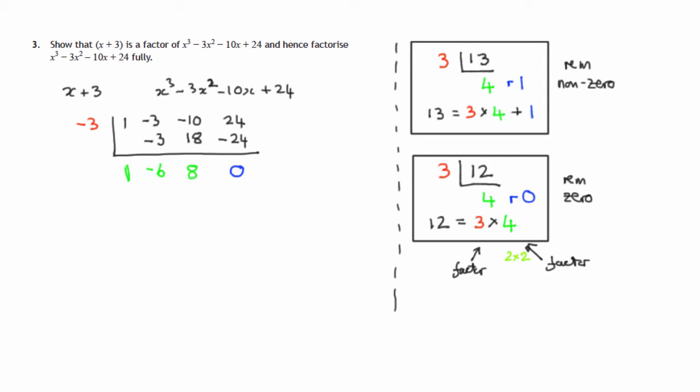So we've established that this polynomial x cubed minus 3x squared minus 10x plus 24, because that's what this is here, is equal to x plus 3 times...